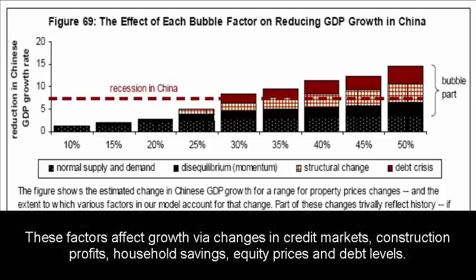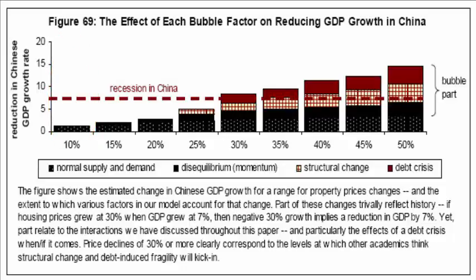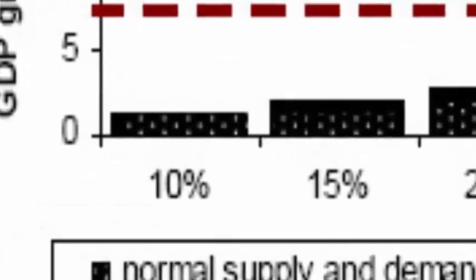Keeping those four factors in mind, the infographic you see in front of you simply looks at the contribution of each of these four factors to any property price decrease as those decreases occur. For example, if we see a 10% decrease in property prices, given the model that we developed in the paper, almost all of that change would be simply due to normal shifts in supply and demand.